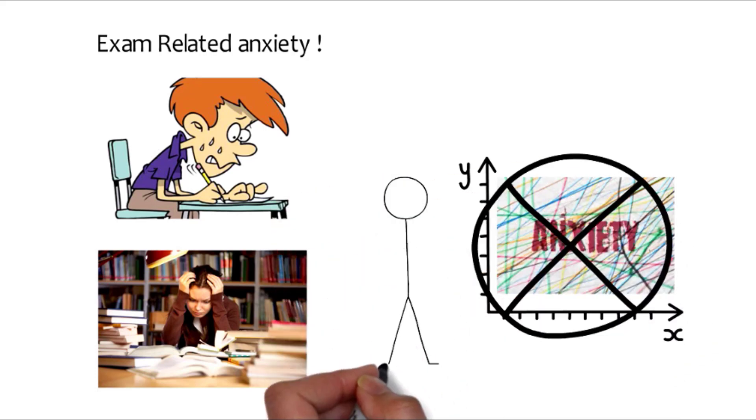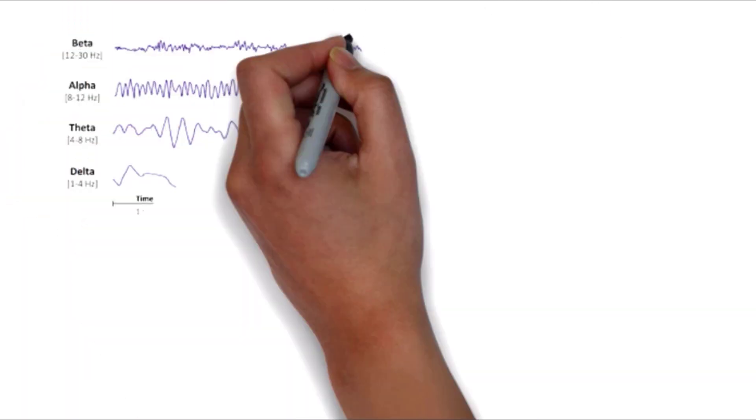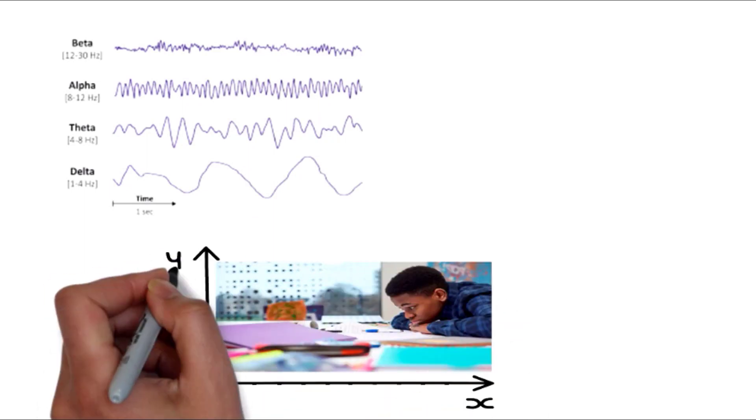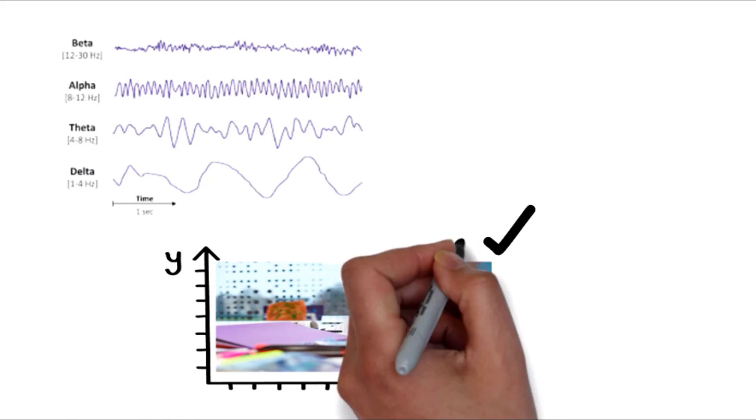Now the question arises: how are we going to do such a task? The answer is we will be using EEG signals which have a range of frequencies and voltages, which in turn makes it a defined scale so it can be used to identify anxiety.